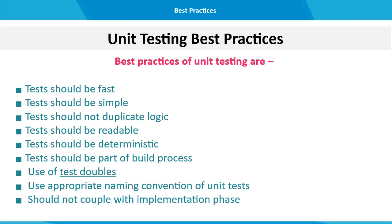Make sure tests are part of the build process. If tests fail, the executable should not be built, which will prevent buggy code from reaching the customer. Use of test doubles is also a good practice. Adopt a sound naming convention for your tests — since tests are also part of documentation, test names should reflect the test scenario. Finally, do not couple your tests with the implementation phase; unit tests should be carried out in the development phase, not in the implementation phase.